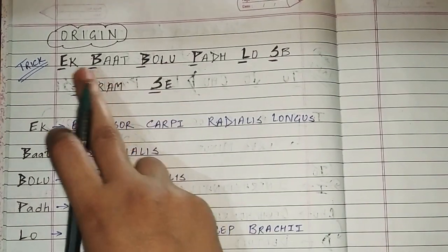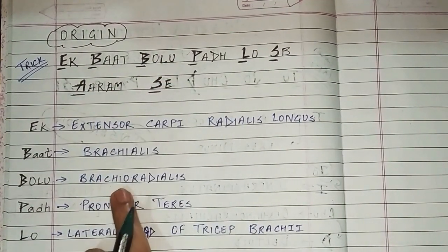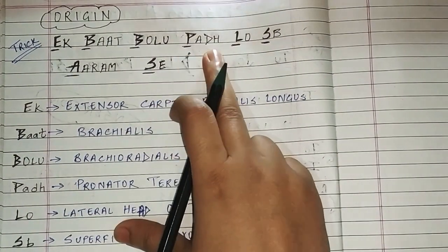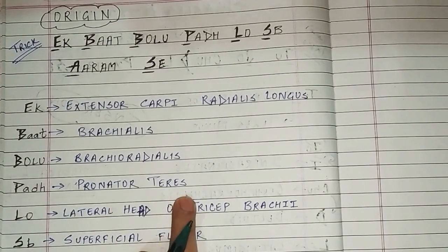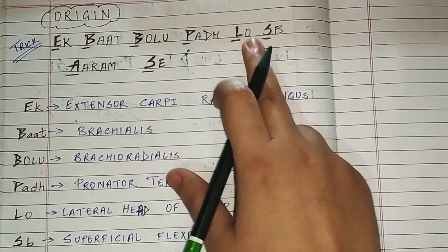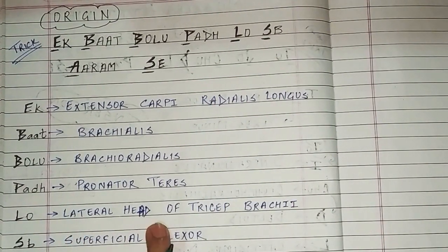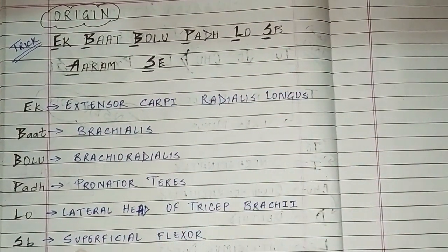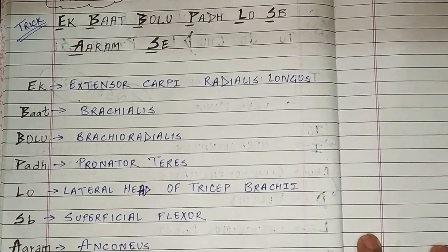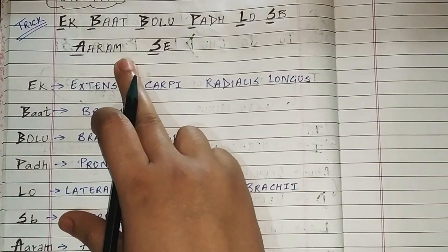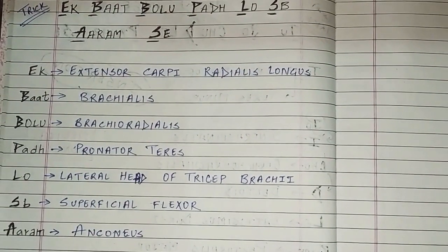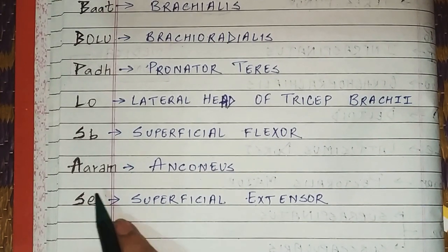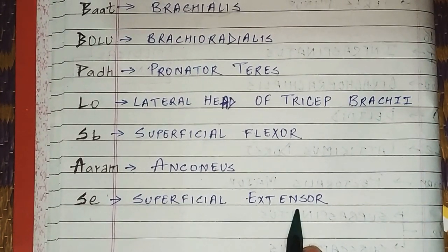B — Brachialis. Then the mnemonic continues: padh (read), P — Pronator Teres. L — Lateral head of Triceps Brachii. Sub (all), S — Superficial Flexor. Aaram (rest), A — Anconeus muscle. Se (from), S — Superficial Extensor muscle.